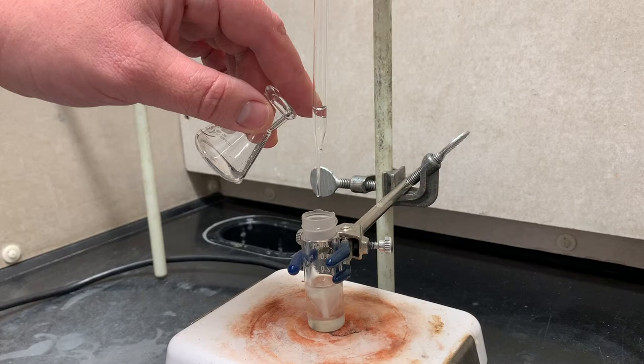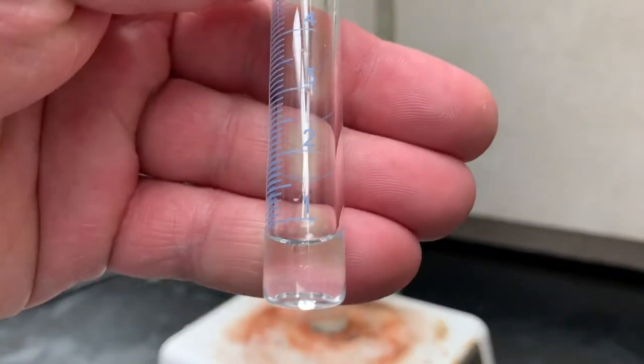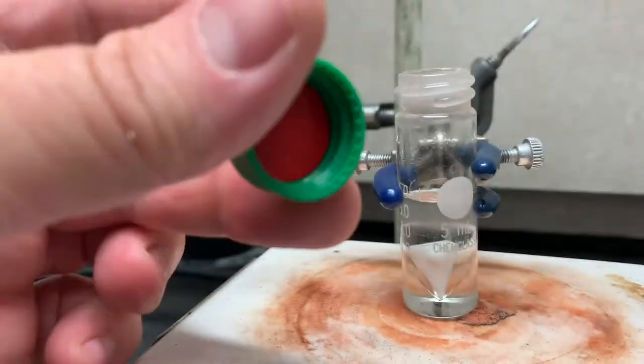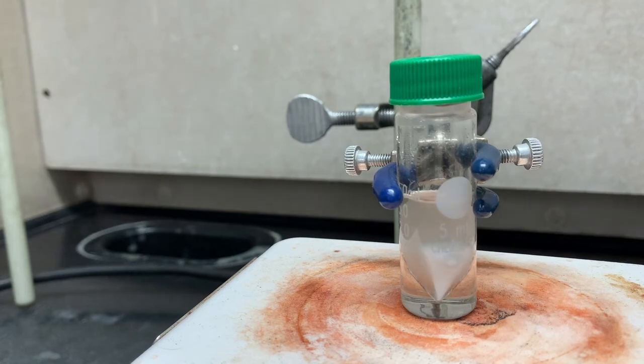Now to perform a micro extraction, we're going to add DCM as our organic phase to our aqueous solution. Cap the vial, stir and shake to merge the two phases. Once they're thoroughly homogenous, turn off the stirring and slowly let it separate into its two different phases.